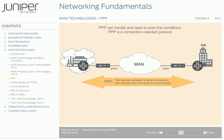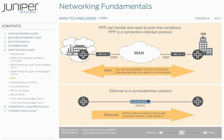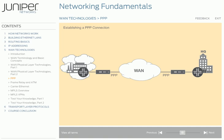Using PPP, two devices establish a formal connection that ensures that they are ready to communicate. Ethernet, on the other hand, is a connectionless protocol. With Ethernet, when a device wants to send data to another device, it just sends it — it has no idea if the device is ready to receive it. In a PPP connection, the two devices can be end-user devices, routers, network access servers, or others. When the two devices want to communicate using PPP, they must first go through a formal connection establishment process using special PPP-specific protocols. This three-step process is sometimes called a handshake.